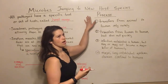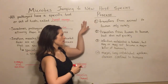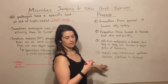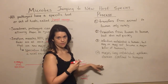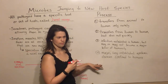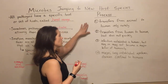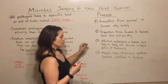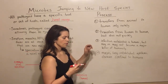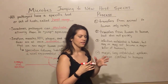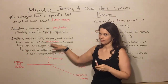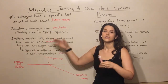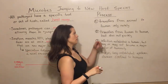Now let's talk about the process. It has four steps, summarized from the book Guns, Germs, and Steel by Jared Diamond, published in 1997. These are the steps through which a pathogen that is a zoonotic pathogen infecting some animal species makes the transition into infecting the human species.